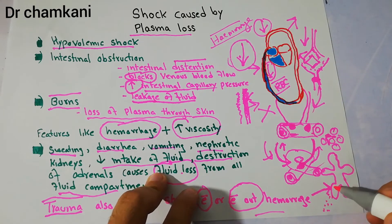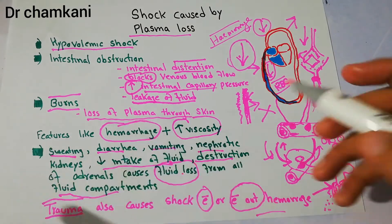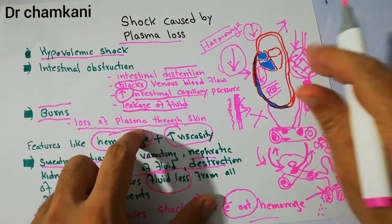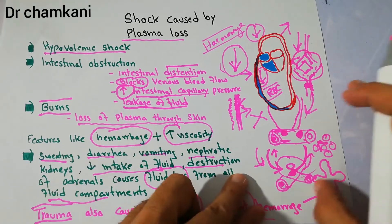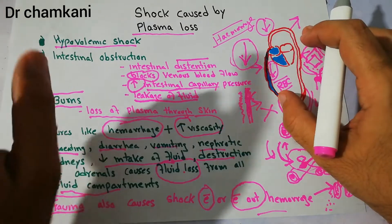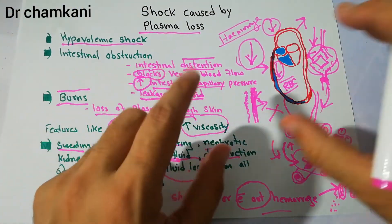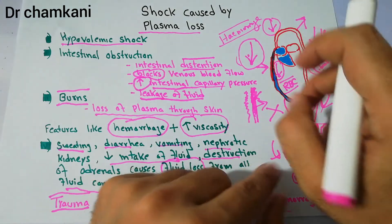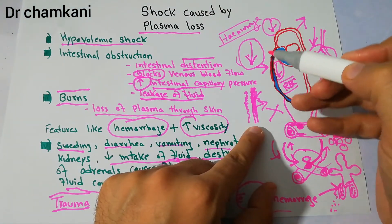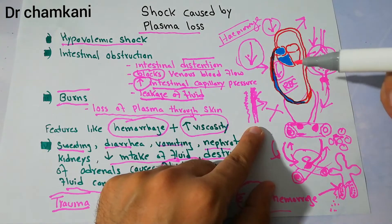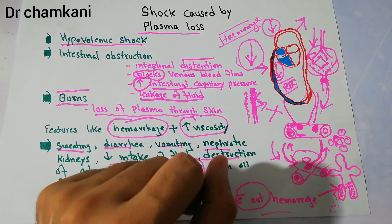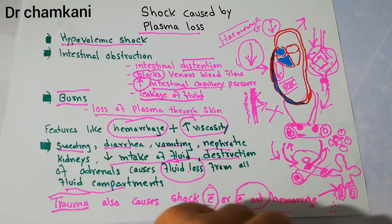In trauma without hemorrhage, there is leakage of plasma and fluid into the tissue due to damage of capillaries — no blood is coming out externally. The plasma accumulates inside the tissue and is not available for circulation. This leads to hypovolemia — reduced blood volume, reduced venous return, reduced cardiac output, reduced arterial pressure, and reduced nutrient supply — causing hypovolemic shock without hemorrhage.